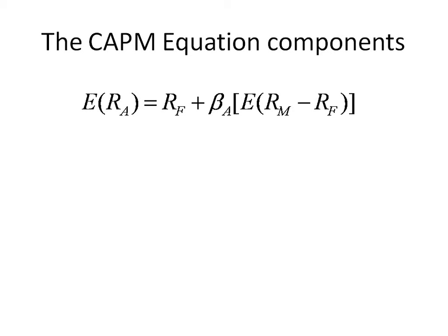On the left hand side, we see ERA, which is the expected return on the asset. You could also have denoted this ERA by the letter K — that would have made no difference. So therefore, expected asset return is what ERA means to us, and it could also be written as letter K. On the right hand side, you see the first item RF, which stands for our risk free rate of return.